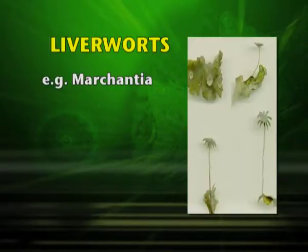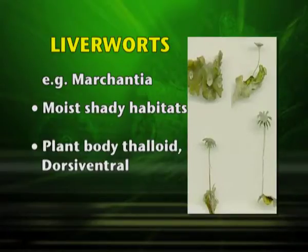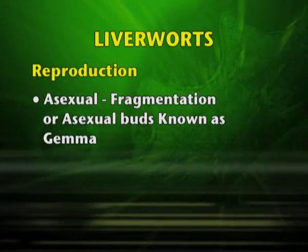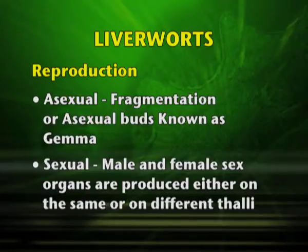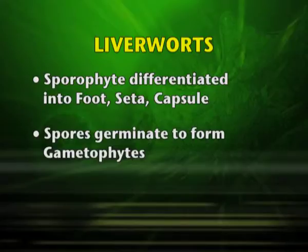Liverworts: Marchantia comes under liverworts. They grow in moist, shady habitats and their plant body is thaloid and dorsiventral. Reproduction may be by asexual means — by fragmentation or asexual buds known as gemmae. Sexual reproduction involves male and female sex organs produced on the same or different thalli. When on the same thallus they are homothallic, and when on different thalli they are heterothallic. The sporophyte is differentiated into foot, seta and capsule. The spores germinate to form the gametophytes.